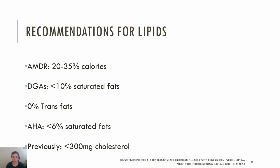The AMDR for fat is 20 to 35% for adults. The emphasis is on consuming polyunsaturated and monounsaturated fats. The Dietary Guidelines for Americans recommends less than 10% of calories from saturated fat, and the American Heart Association recommends less than 6%. Trans fats are recommended to be zero. Previously, the 2015-2020 Dietary Guidelines recommended limiting cholesterol to 300 milligrams; however, the new guidelines warn against consuming cholesterol without a specific target.